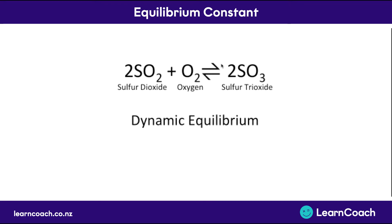If you counted the number of molecules that were actually reactants and products it would stay the same, even though there's constant change going on. We denote this when we write an equation as two half arrows — some going forward, some going back — and that tells the marker we know it's a dynamic equilibrium equation.